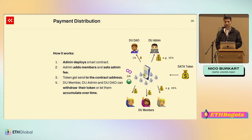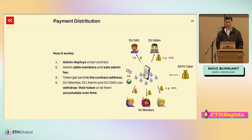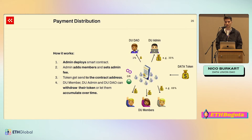Once tokens get sent to the smart contract — which could happen on a marketplace, for example, where someone pays to subscribe to your stream — those tokens get sent to the smart contract, and then your members are able to withdraw their tokens. Or they can just accumulate them over time and take them out whenever they want.